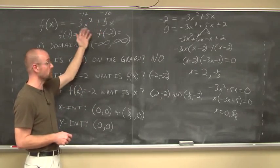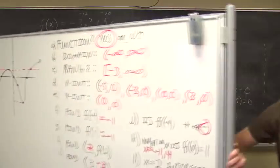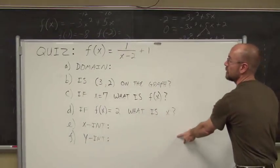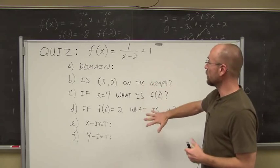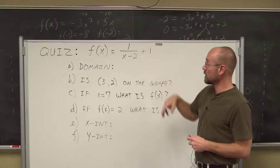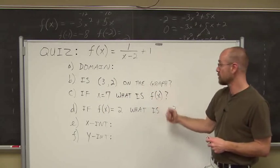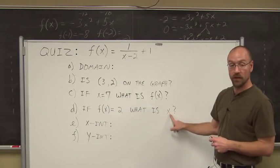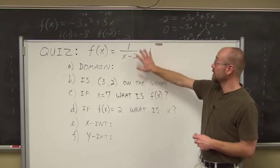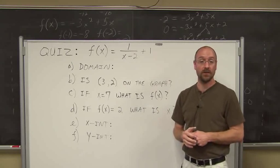We should be able to assess functions using function notation, even without a graph. Here's your quiz to try on your own: the function f of x equals 1 over x minus 2, plus 1. You'll answer the same set of questions as the previous example — find the domain, determine if the given point is on the graph, find the function value when x is 7, find the input when the function value is 2, and find any x-intercepts and y-intercepts. Be careful with this one and show your work. This has been section 3.2. Thank you for watching.